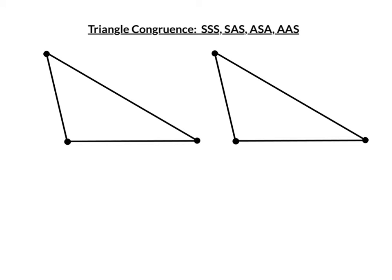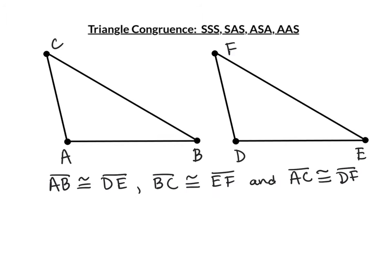The first condition we're going to look at is Side-Side-Side. If we have three pairs of congruent sides — AB congruent to DE, BC congruent to EF, and AC congruent to DF — then the triangles are congruent by Side-Side-Side. We have three sets of congruent sides, therefore the triangles are congruent.